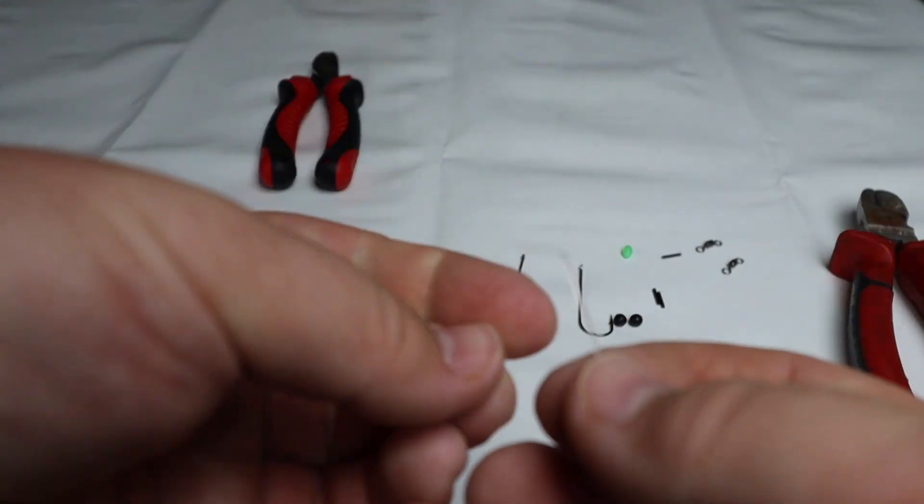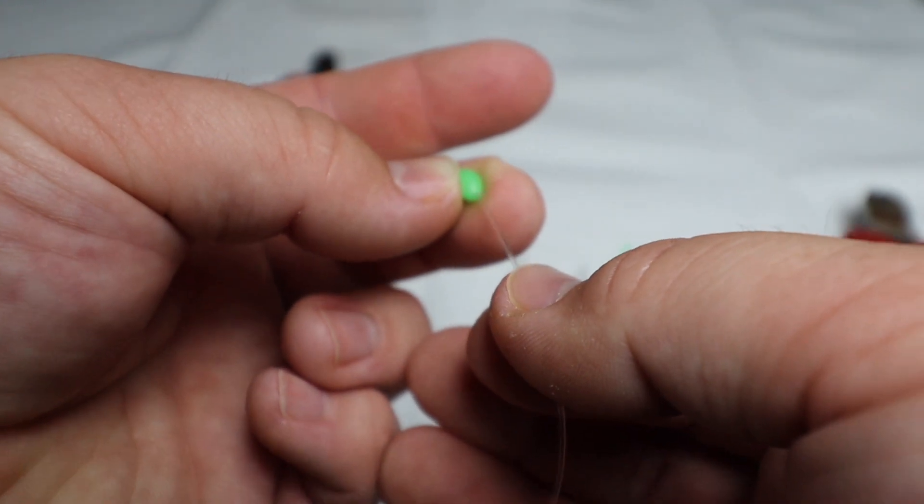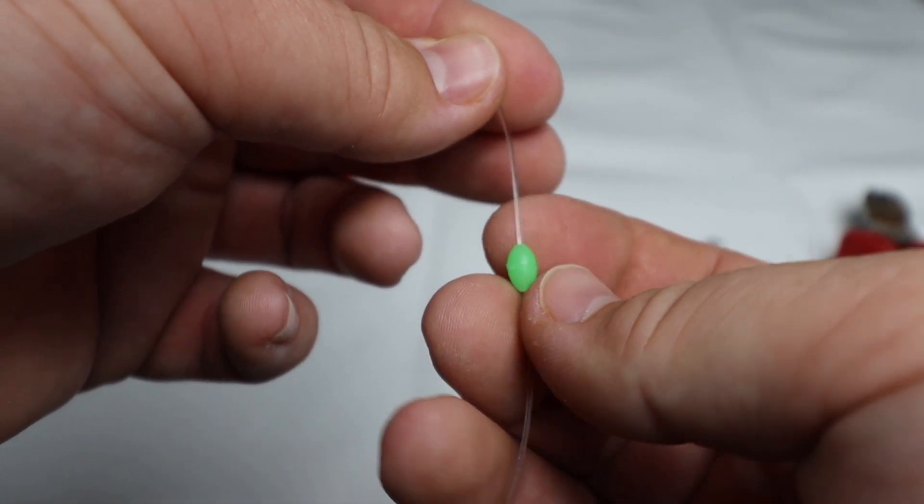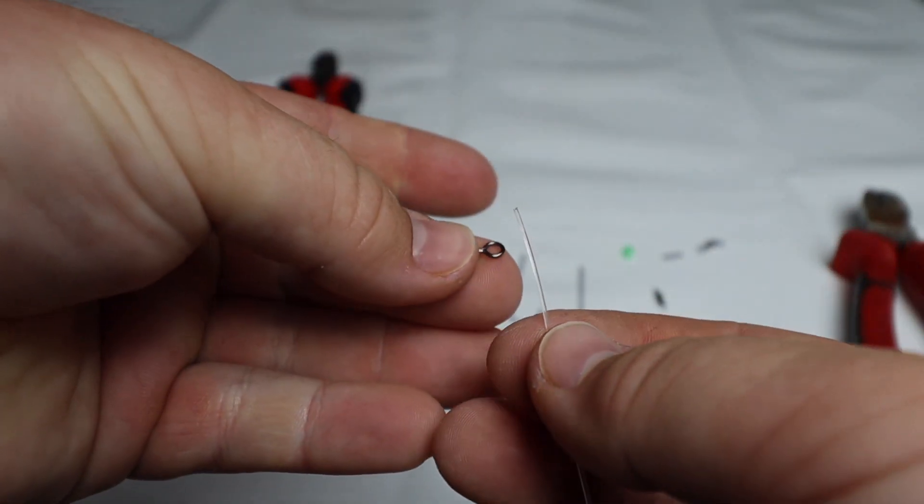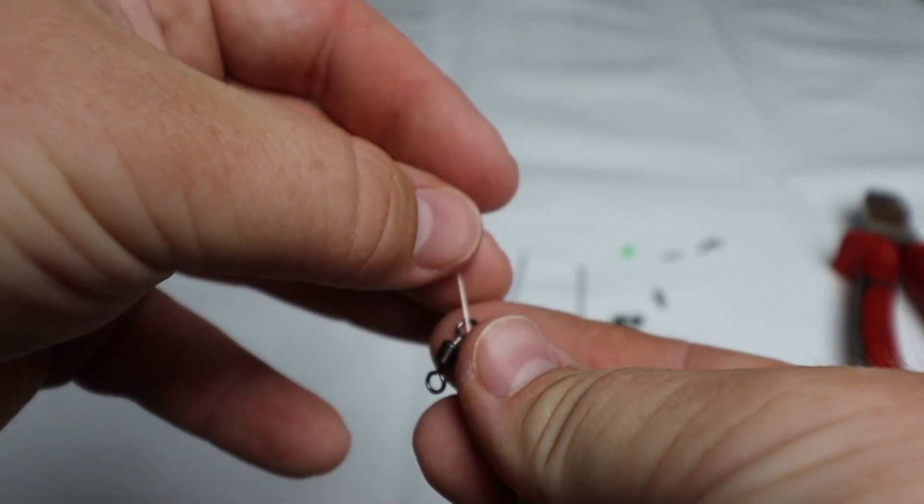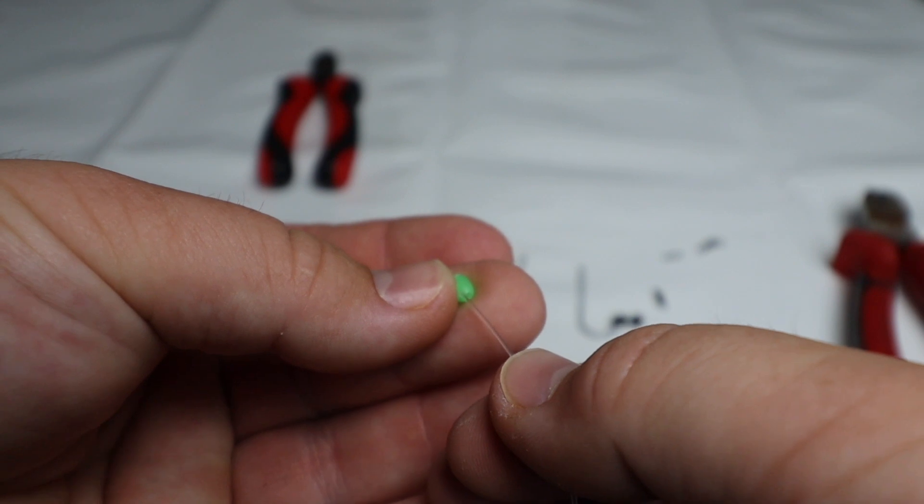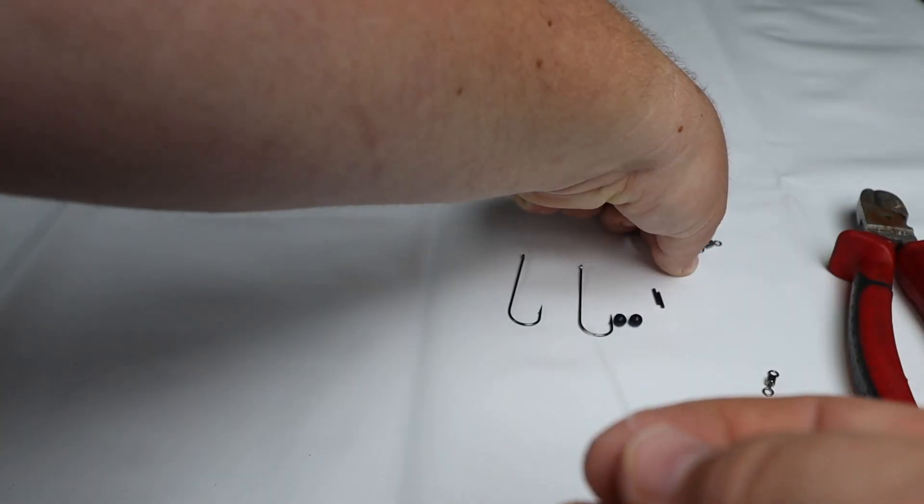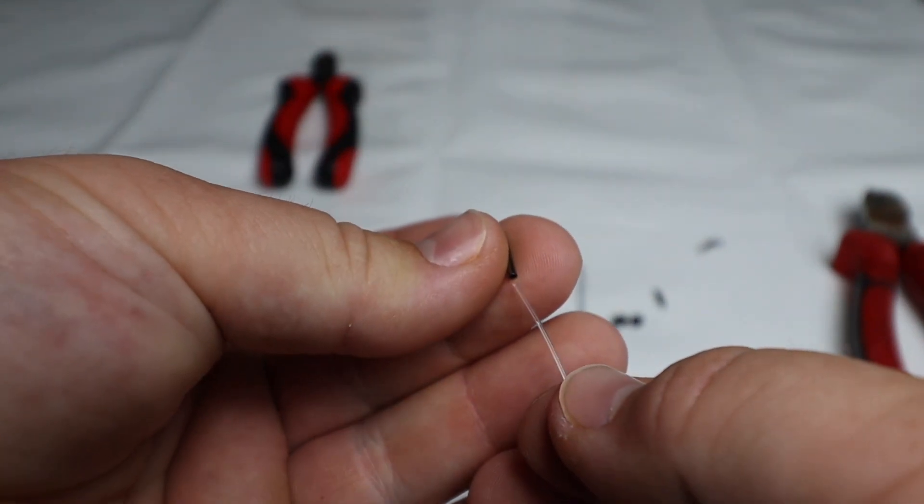So the first crimp goes on. I'm going to add our oval beads this time. It doesn't matter - you could use just normal round beads, just because I've got them. It makes it look a little bit neater I find. Thread on our swivel, another green oval bead, and another crimp.